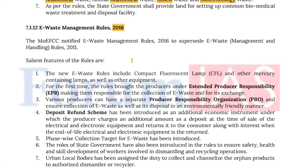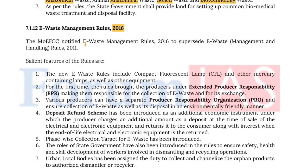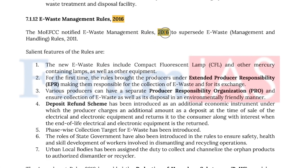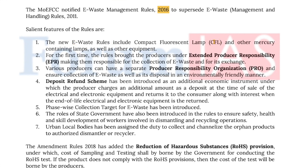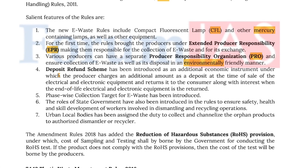E-Waste Management Rules of 2016, with another amendment in 2022. The 2016 rules include CFLs and other mercury-containing lamps as well as other equipment. For the first time, the rules brought producers under Extended Producer Responsibility (EPR), making them responsible for the collection of e-waste and its exchange. Various producers can have a separate Producer Responsibility Organization to ensure collection and environmentally friendly disposal of e-waste. A deposit refund scheme has been introduced as an additional economic instrument under which the producer charges an additional amount as a deposit at the time of sale of electrical and electronic equipment, and returns it to the customer along with interest when end-of-life electronic waste equipment is returned.